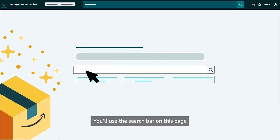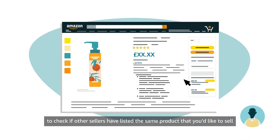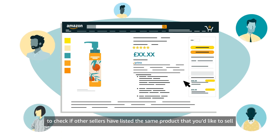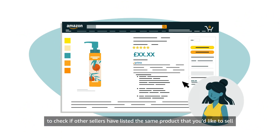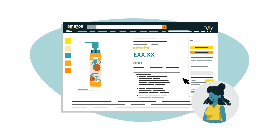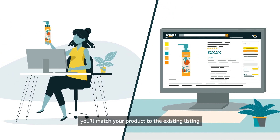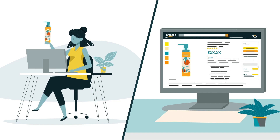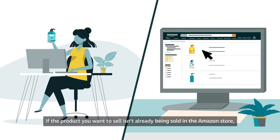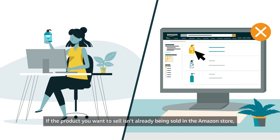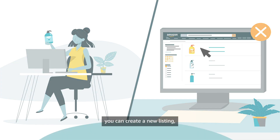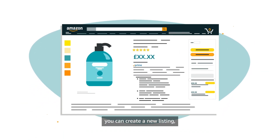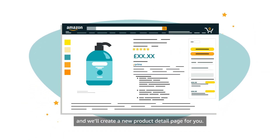You'll use the search bar on this page to check if other sellers have listed the same product that you'd like to sell in the Amazon store. If so, you'll match your product to the existing listing and add your offer information. If the product you want to sell isn't already being sold in the Amazon store, you can create a new listing and we'll create a new product detail page for you.